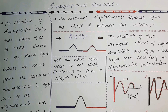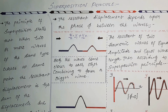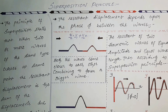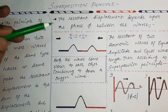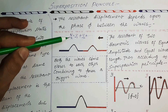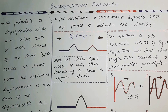Now let's move towards our next topic: the superposition principle. If you are studying waves, this superposition principle is a very important topic. Basically, the superposition principle is used to find the resultant displacement of a particle when it is under two or more than two disturbances.